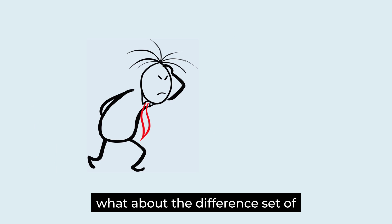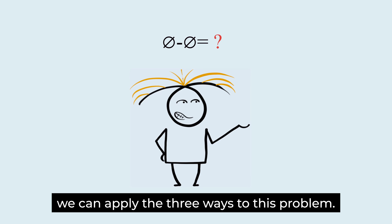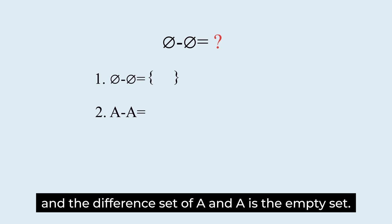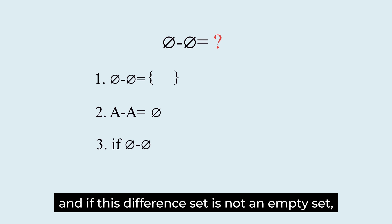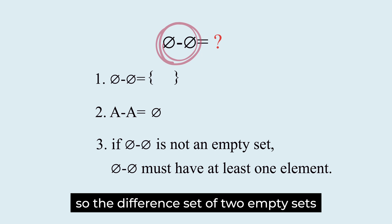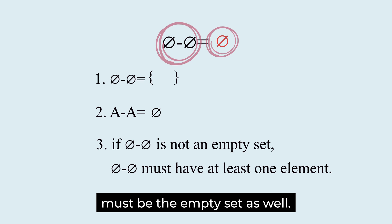What about the difference set of an empty set and an empty set? We can apply the three ways to this problem. There are no elements in this difference set. And, the difference set of A and A is the empty set. And, if this difference set is not an empty set, it doesn't make any sense. So, the difference set of two empty sets must be the empty set as well.